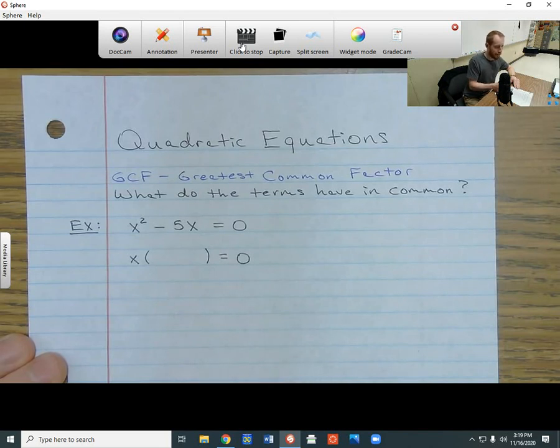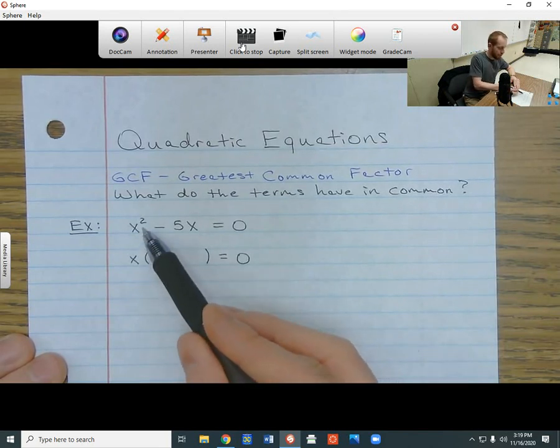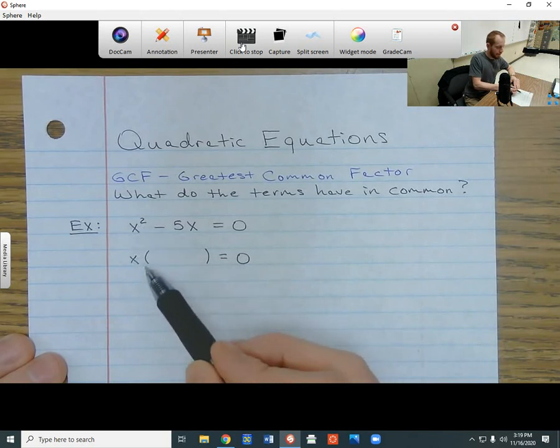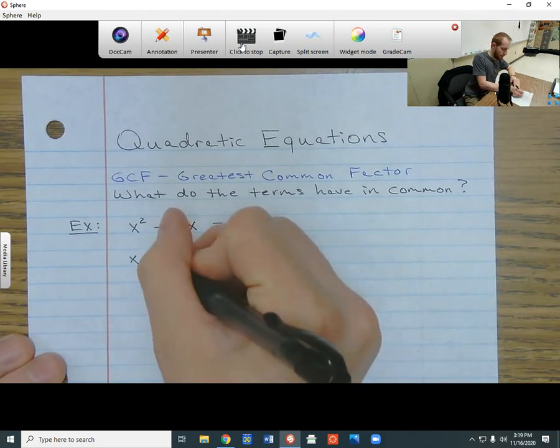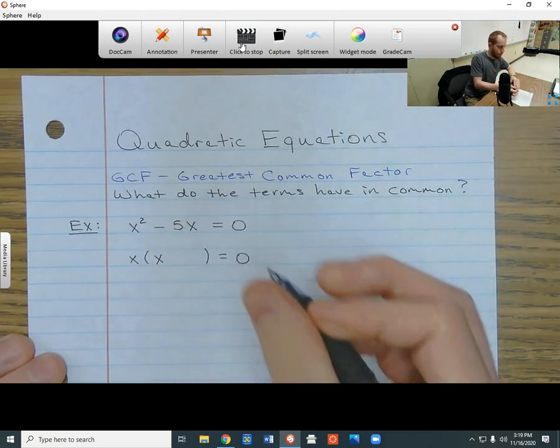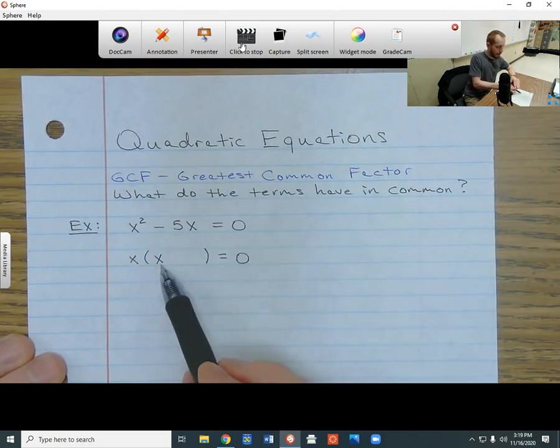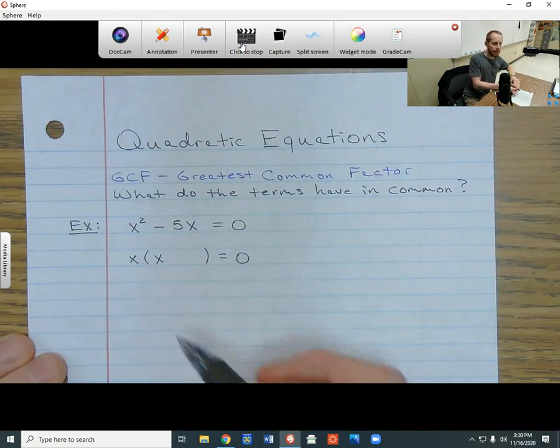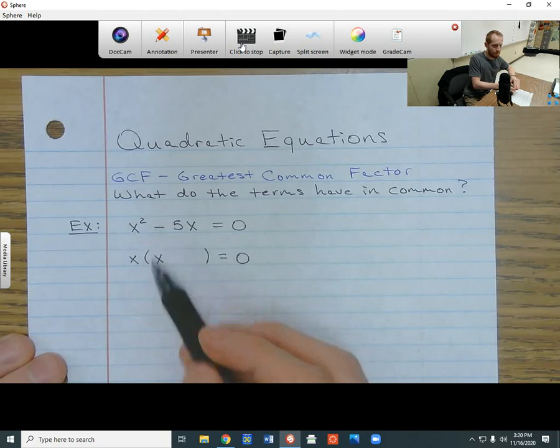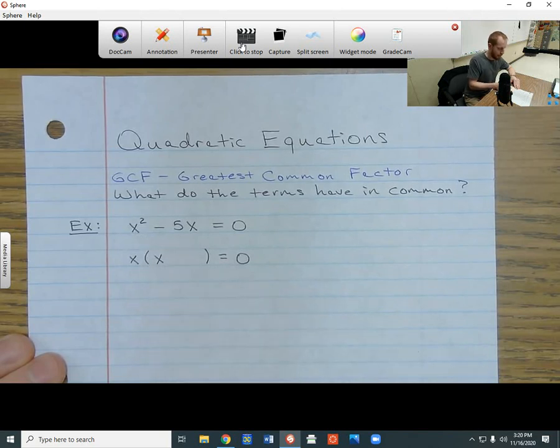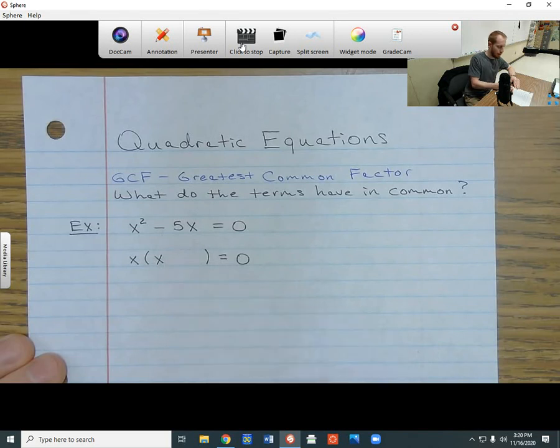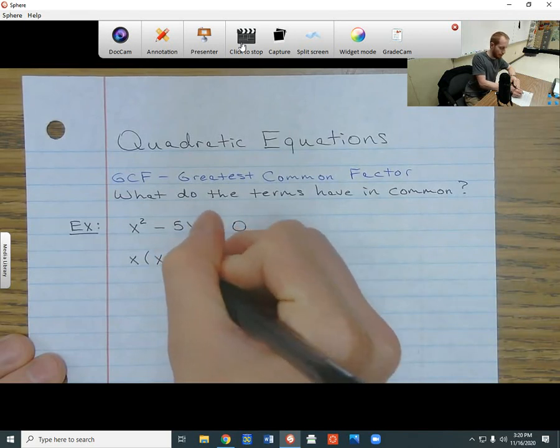So I just took out x. I know that this has two x's, and if I already took out one x, then I need one more x to go on the inside. So that way, when I multiply these back together, I get x times x, and that's going to give me that x² that I have right here. And now, what sign is in the middle? I have a minus sign, so I'm going to bring that down.